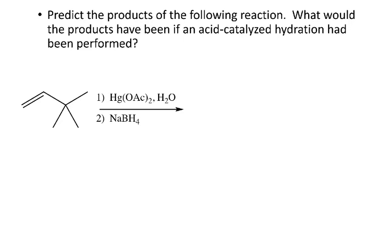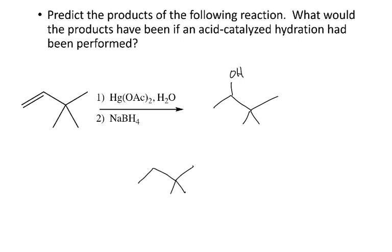For one final example, we want to know the products of this reaction using oxy-mercuration-demercuration, so I should only get one product where the OH adds at the Markovnikov position. However, if this reaction were done with acid-catalyzed hydration, when we form the secondary carbocation we can get a methide shift where one of the methyl groups moves over, resulting in a tertiary carbocation, and then the OH would add there — giving a mixture of products.